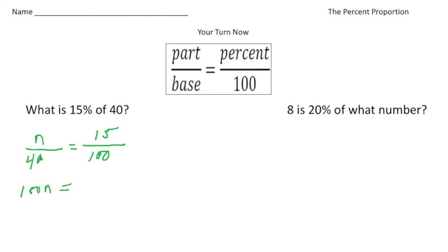And that's going to equal 40 times 15, which is 600. And now to solve for n, I'm going to divide both sides by 100, and we end up with n equals 6. So 15% of 40 is 6.